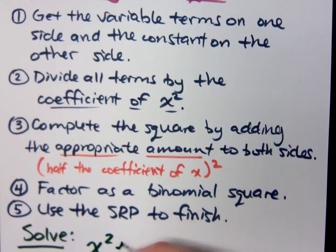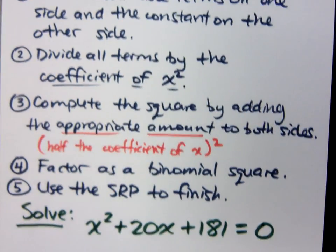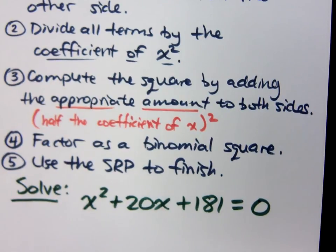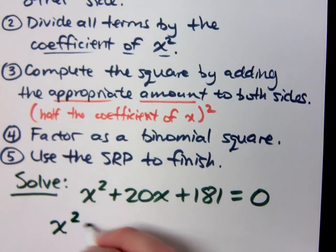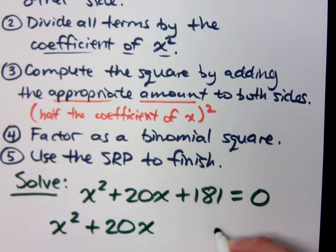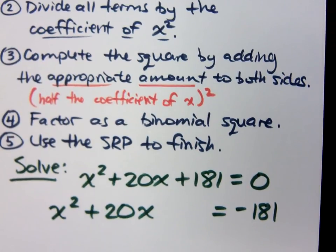If I take x squared plus 20x plus 181 equals 0, let's see if we can solve this. The first step is to get your x's on one side and the constant on the other. So the 181 needs to go: x squared plus 20x equals negative 181. Now divide all terms by the coefficient of x squared. The coefficient is one, so dividing by one doesn't matter.